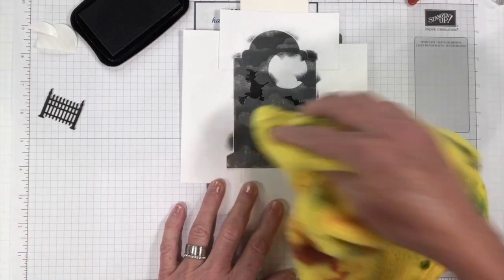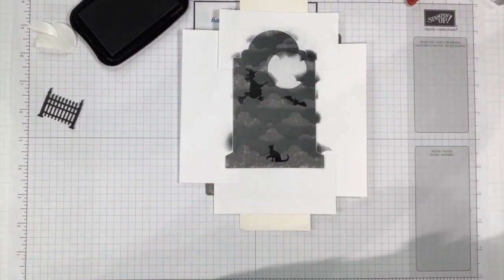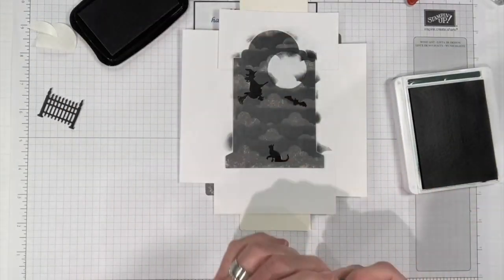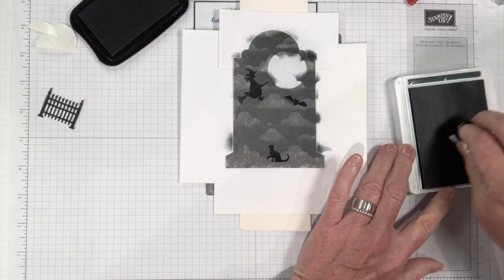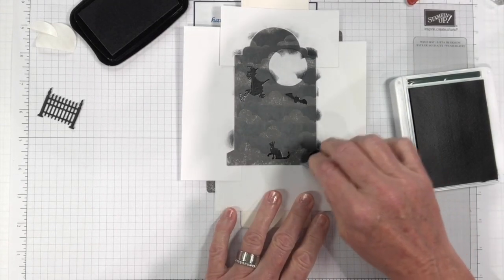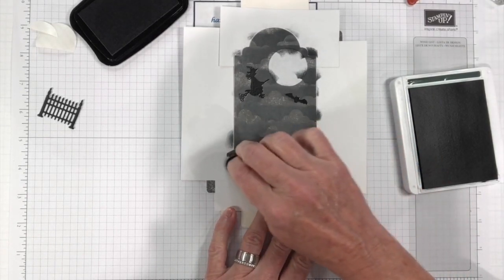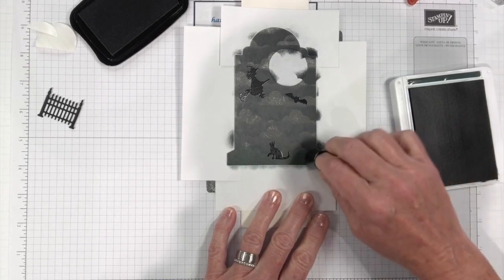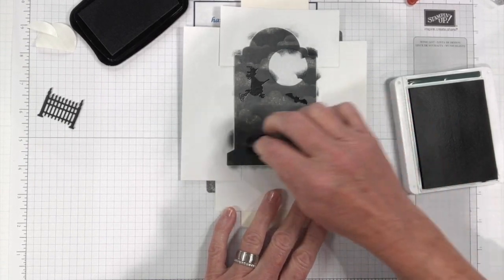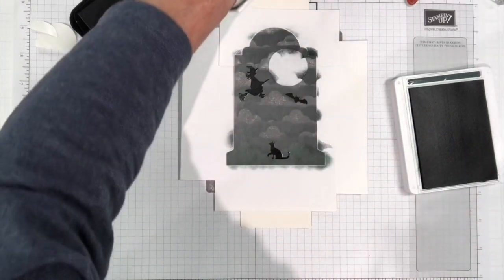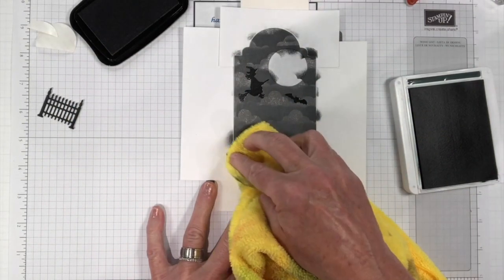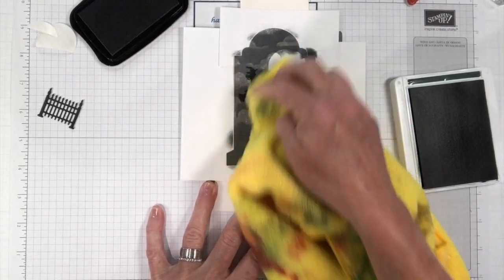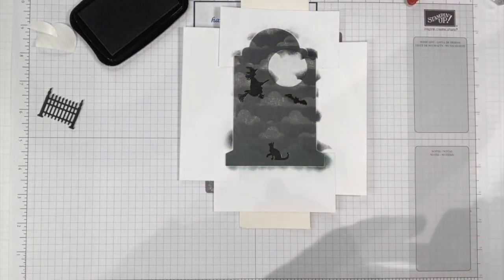I always have a microfiber towel. Because this ink does just kind of sit there, we're just going to wipe off the excess, but we can still see our clouds. We're going to bring in our evening evergreen and just do a little bit more ink blending on the bottom just so the cat doesn't look like he's sitting there in the clouds. We kind of want him to have a little bit of a ground cover here. Then again, just give it a quick little wipe because that does just sit on that paper.